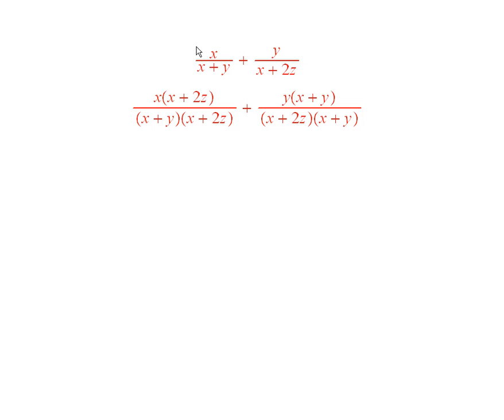You write the first fraction as x times x plus 2z divided by x plus y times x plus 2z. And see, this is the same thing as that, because these two factors are the same, so they would cancel.